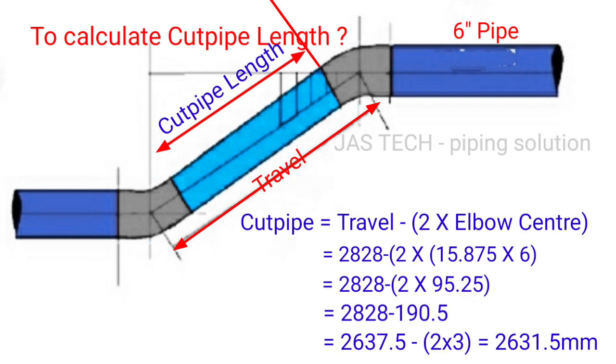So 2828 minus 190.5 mm equals 2637.5 mm, minus 2 root gap, 2 times 3 mm. So the final answer is 2631.5 mm. That is the cut pipe length.